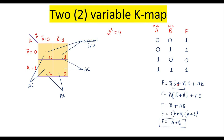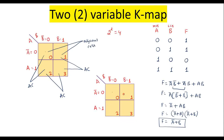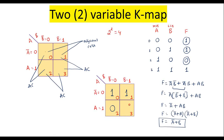Now we will simplify the same expression using KMAP. Entries in the KMAP are made directly from the truth table. The output 1 at A=0, B=0 goes into cell 0. Cell 1 corresponds to A=0, B=1. Cell 2 is A=1, B=0, and cell 3 is A=1, B=1. So we write 1 in cell 0, 1 in cell 1, 0 in cell 2, and 1 in cell 3. Since this is a minterm expression, we do the grouping of ones only and ignore zeros.